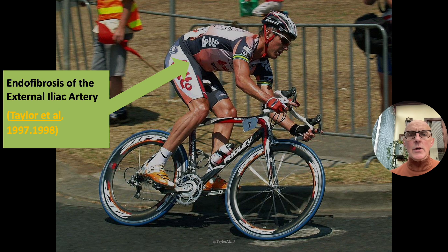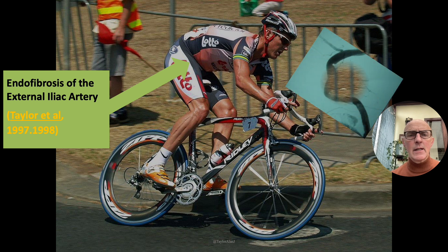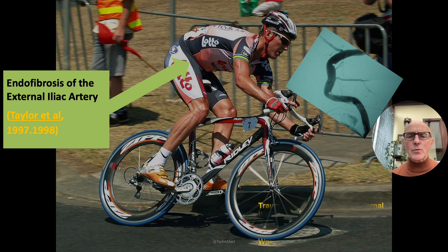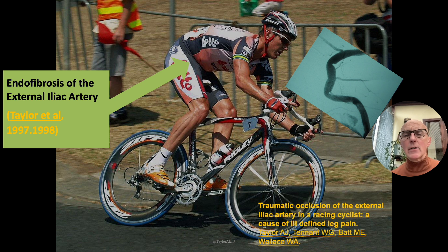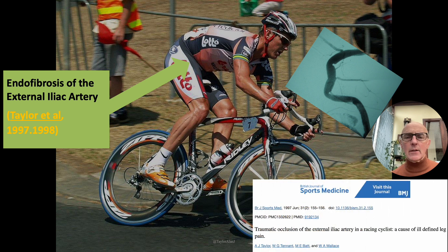Interestingly, it's not just the older age groups that suffer vascular issues. What we've come to realise in more recent years is that vascular conditions can affect younger elite athletes. There's a condition called endofibrosis which can affect most commonly the iliac arteries and lead to lower limb symptoms which can be mistaken and misdiagnosed as pain of lumbar referred origin.